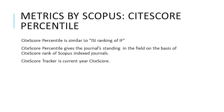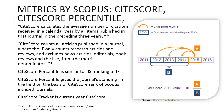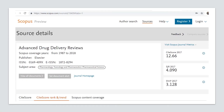The CiteScore Tracker is the current-year CiteScore. You can roughly say it is a one-year impact factor. On the landing page or home page of a Scopus-indexed journal, these metrics are freely available — CiteScore, CiteScore Rank, trend, and Scopus content coverage are always mentioned there.